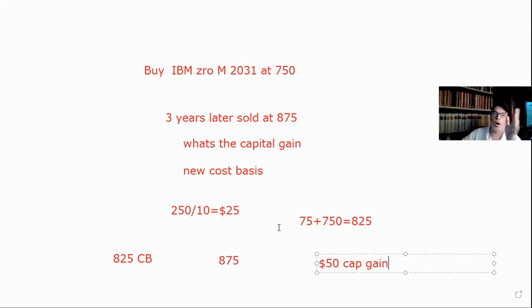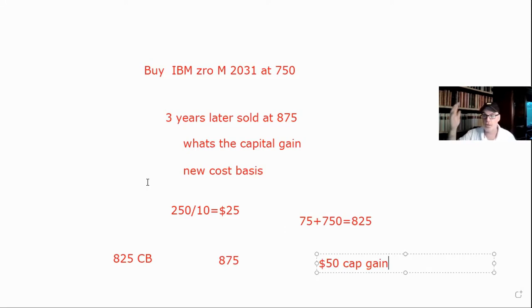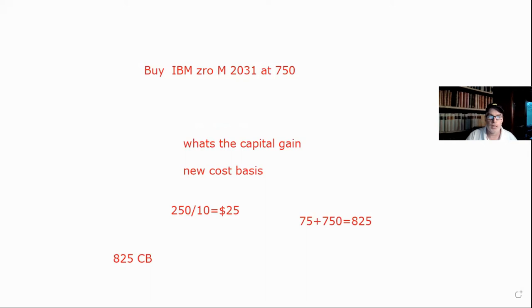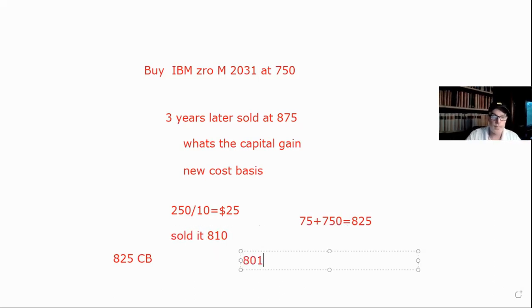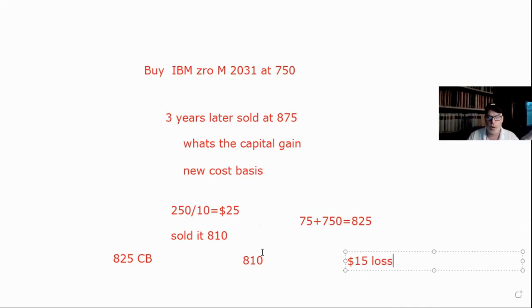To summarize the math: take the distance from par, divide by years to maturity, and add that each year. Your cost basis goes 775, 800, 825 — that third year cost basis of 825 is what you compare against proceeds. If instead we sold the bond at 810, we'd actually have a $15 loss, even though we sold it for more than we bought it. That's because we're required to accrete.